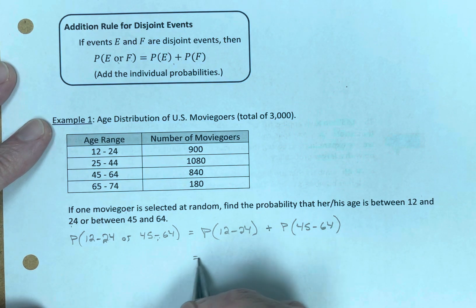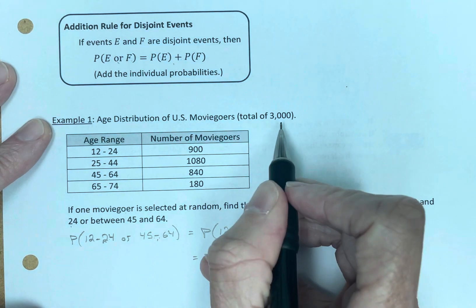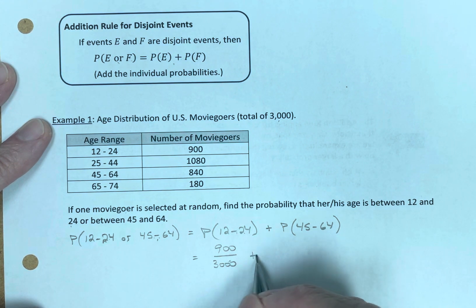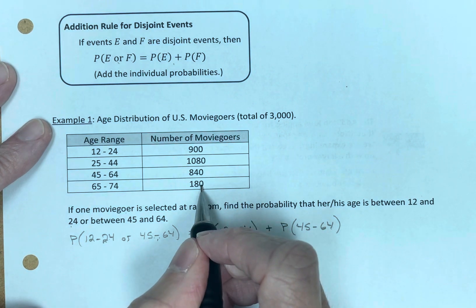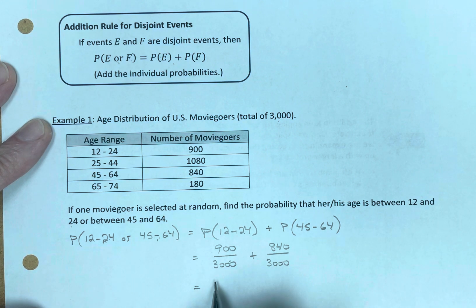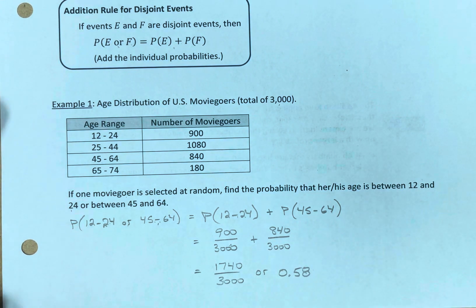Well, let's do it. The probability between 12 and 24: there are 900 of those, and we know we have 3,000 total. So that's the probability of the moviegoer being selected at random being in this age range. Plus, how many are between 45 and 64? 840, and of course that's also out of 3,000. So we add those two numbers up. The fraction is 1740 over 3,000, and that can certainly be simplified. I'm going to write that as a decimal. It's approximately 0.58 or 58% probability.